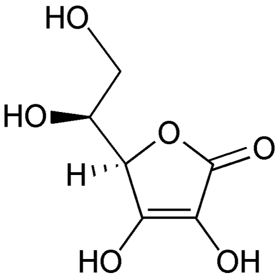In redox processes, the reductant transfers electrons to the oxidant. Thus, in the reaction, the reductant or reducing agent loses electrons and is oxidized, and the oxidant or oxidizing agent gains electrons and is reduced. The pair of an oxidizing and reducing agent that are involved in a particular reaction is called a redox pair. A redox couple is a reducing species and its corresponding oxidizing form, e.g., Fe2+/Fe3+.